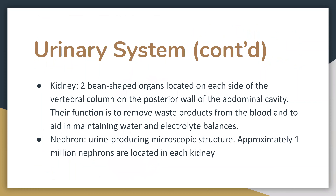The kidneys are the main part of the urinary system. There are two bean-shaped organs located on each side of the vertebral column on the posterior wall of the abdominal cavity. Their function is to remove waste products from the blood and to aid in maintaining water and electrolyte balances.